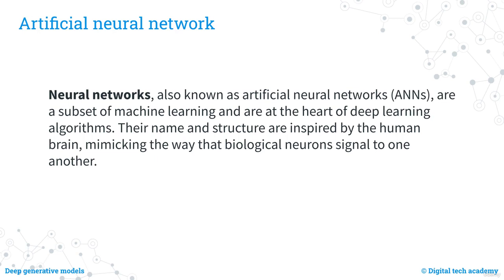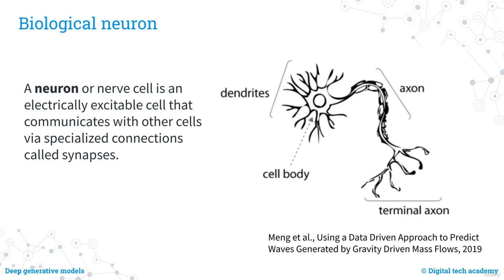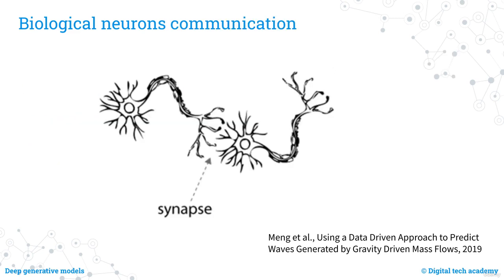A biological neuron is an electrically excitable cell that communicates with other cells via specialised connections called synapses — the points at which electrical signals are transmitted from one cell to another. Synapses are essential for the proper functioning of the nervous system, allowing neurons to transmit information and enabling us to think, move, and feel. At the synapse, the electrical impulse is converted into a chemical signal via a neurotransmitter, and the receiving cell converts it back into an electrical impulse if it meets certain criteria.